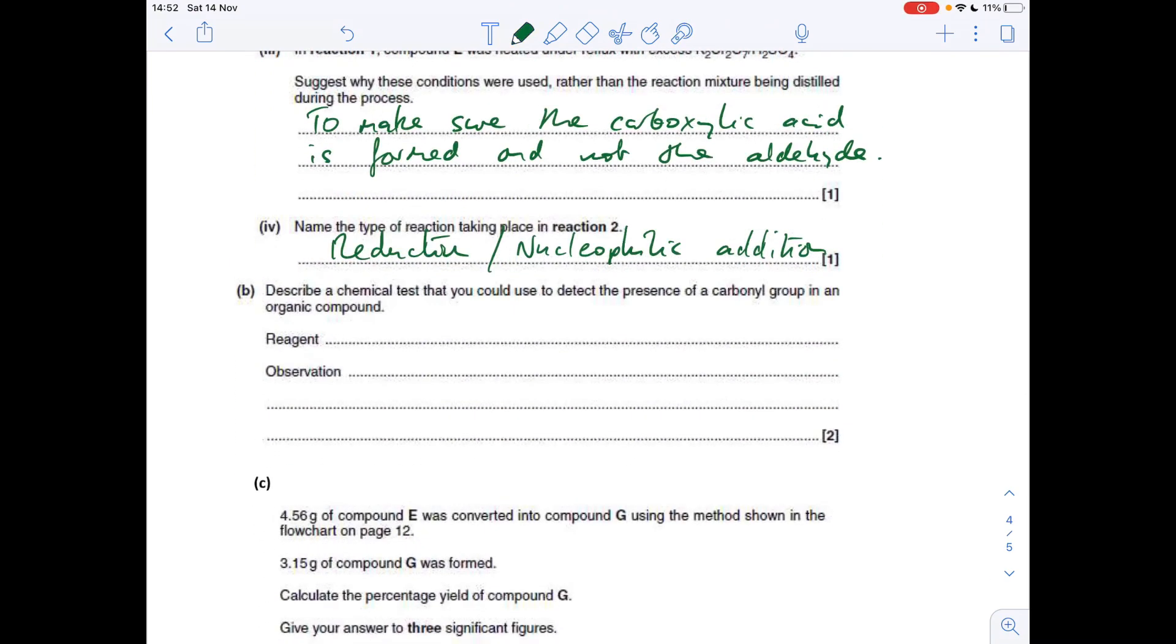Part B: describe a chemical test you could use to detect the presence of a carbonyl group in an organic compound. So obviously that's react with 2,4-DNP or Brady's reagent. And the observation is you get a yellow-orange precipitate.